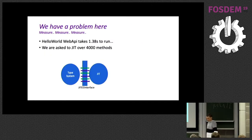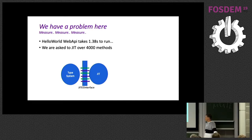We have a problem. Hello World takes 1.38 seconds to start up, and real-world applications use far more functions. Who is liable? It's actually between JIT and type system. We believe these two account for about 60% of startup time — preparing those 4,000 methods to be JIT-compiled.